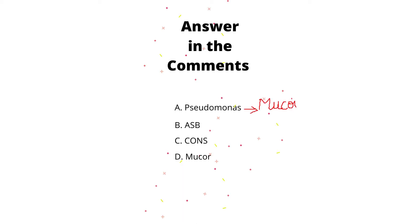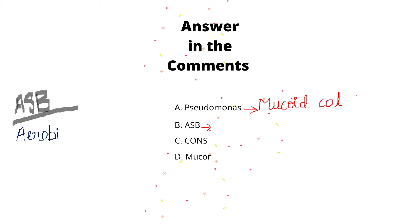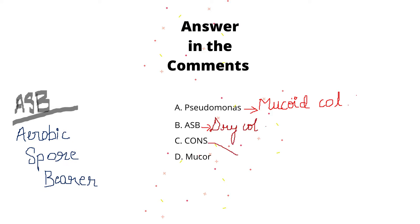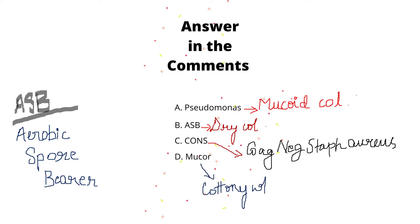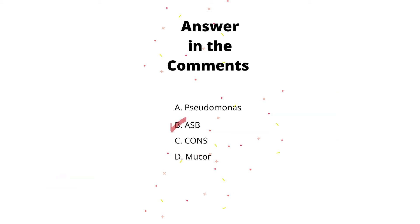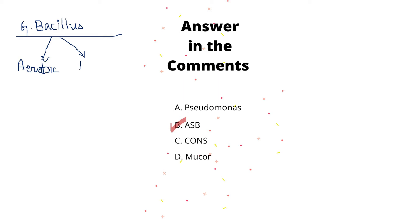Pseudomonas produces mucoid colonies. ASB, which stands for aerobic spore bearer, produces dry colonies. CONS — coagulase-negative Staphylococcus — produces moist white colonies, and Mucor produces cottony white colonies. So the correct answer to this question is ASB. ASB belongs to the genus Bacillus, which are spore-forming organisms.